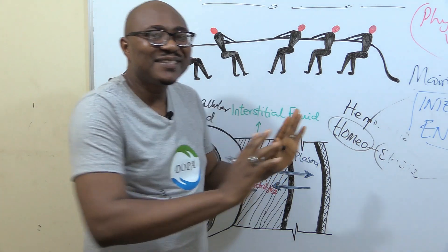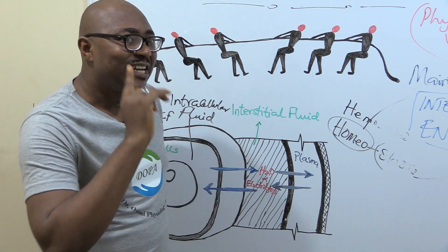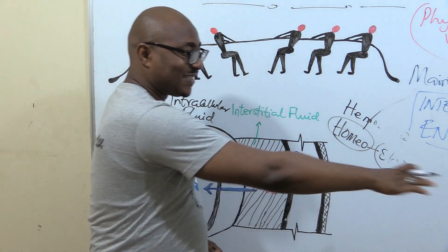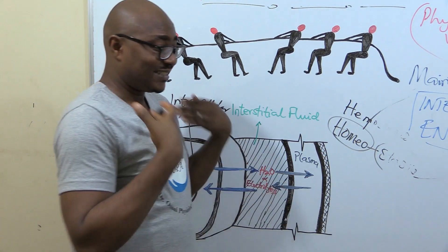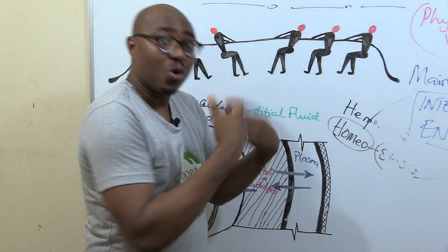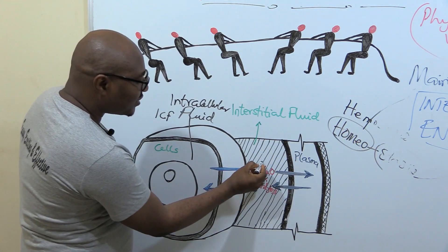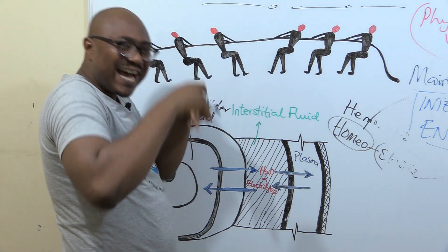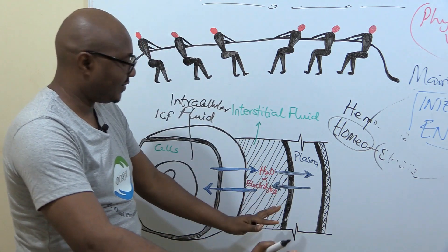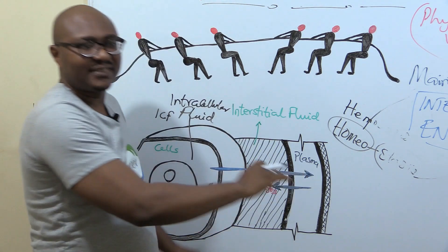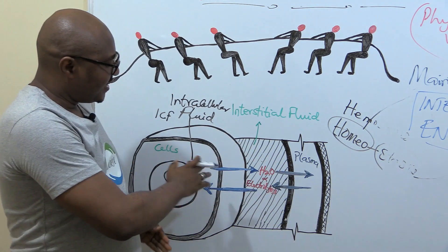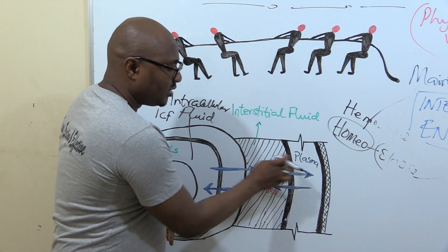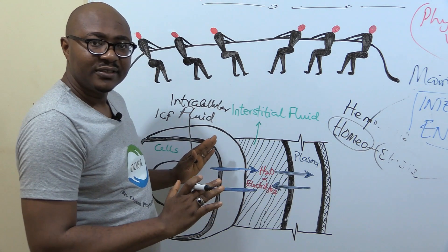The interstitial fluid is in communication with the plasma within blood vessels, and the blood vessels are in communication with the outside world — the external environment. That external environment is outside your skin. The internal environment — especially the interstitial fluid and plasma — surrounds the cell. Everything that will affect the cell has to come from there. The cell gives out and takes in from what is contained in this extracellular fluid compartment.